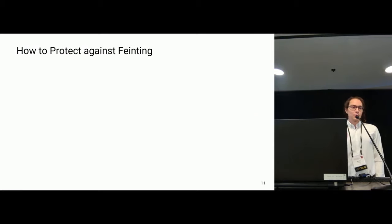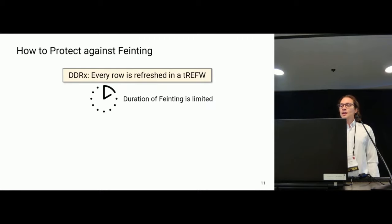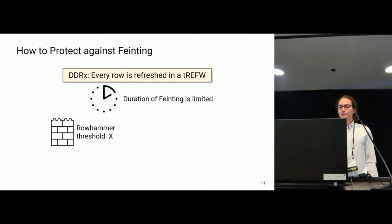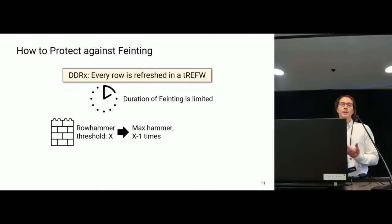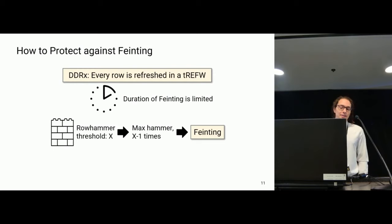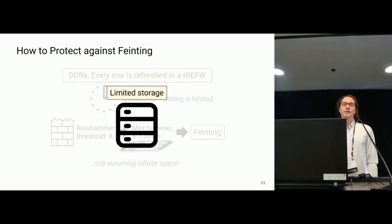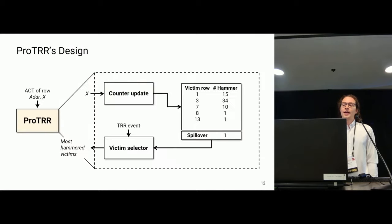How exactly do we protect against fainting? Luckily, DDR expects every row to be refreshed at least once in a tREF window, which bounds the duration of fainting. Starting from a certain Rowhammer threshold x, the maximum amount of time a row can be hammered is x minus one. Fainting gives us the idea of whether a device can be protected at all or not. However, we are still assuming infinite storage, so we need to introduce the first real-world problem: limited storage.